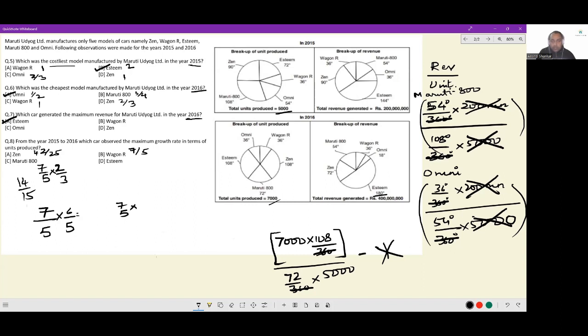And finally, for Esteem, we have 7 by 5 into how much Esteem? 108 divided by 72, which is 3 by 2. So this turns to 21 by 10.